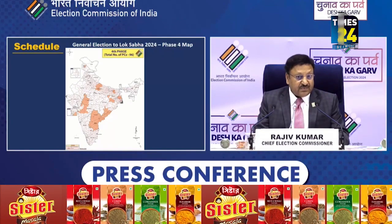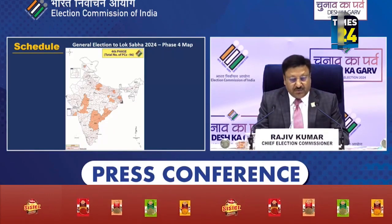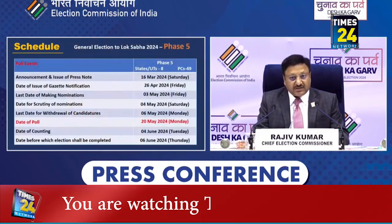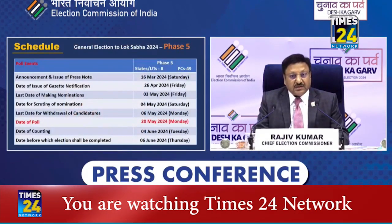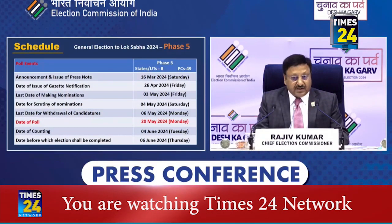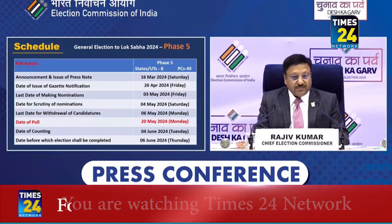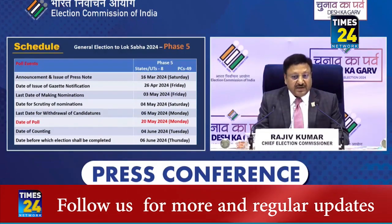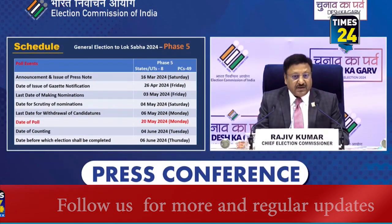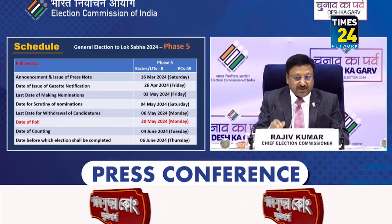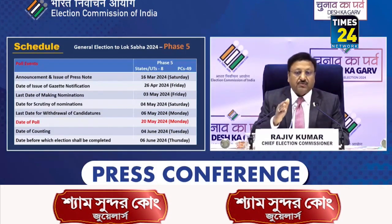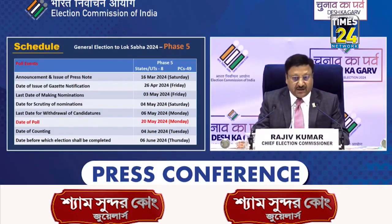Entire Western India would be complete, North East would be complete. And 5th phase will start from 26th April and go till 20th May. 20th May will be the date of poll, with nomination, scrutiny, and withdrawal dates in between.